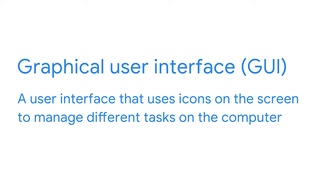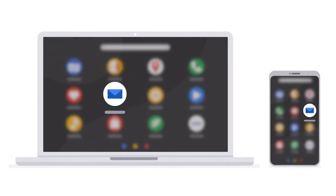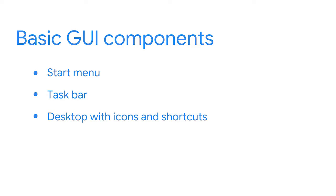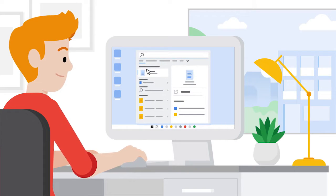A GUI is a user interface that uses icons on the screen to manage different tasks on the computer. Most operating systems can be used with a graphical user interface. Most GUIs include a start menu with program groups, a task bar for launching programs, and a desktop with icons and shortcuts. All these components help you communicate with the OS to execute tasks. In addition to clicking on icons, you can also search for files or applications from the start menu. You just have to remember the icon or name of the program to activate an application.